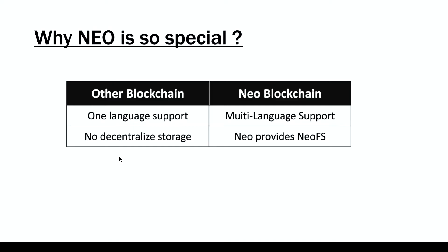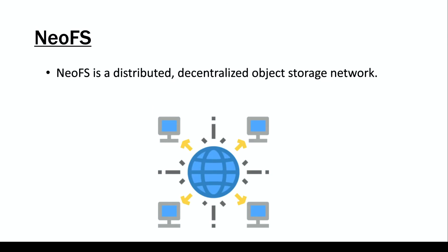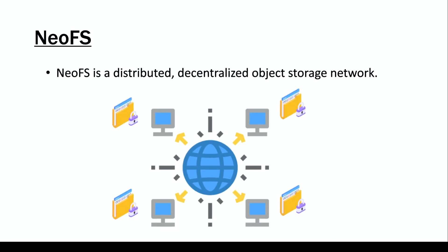The second difference is that other blockchains do not provide a facility for decentralized storage, but NEO blockchain has NeoFS. Storing images or videos on a blockchain can be very costly, and normally you'd need an external party like IPFS. With NEO, you can use NeoFS — a distributed, decentralized object storage network — to distribute files across the NEO network, stored in an encrypted format so nobody can read your files.